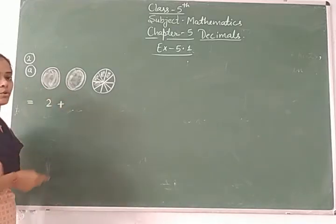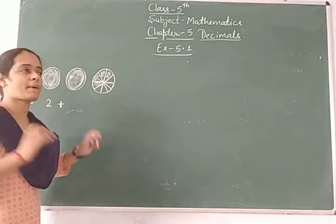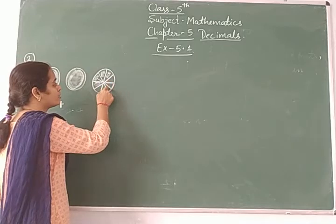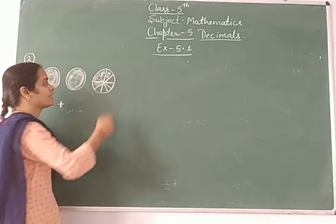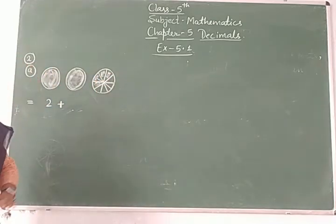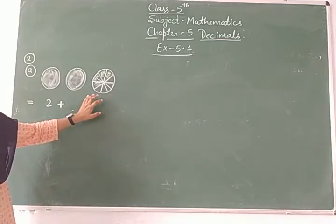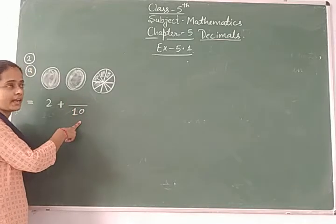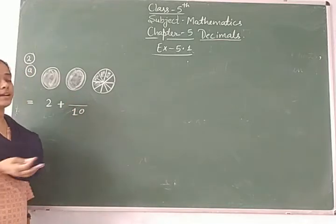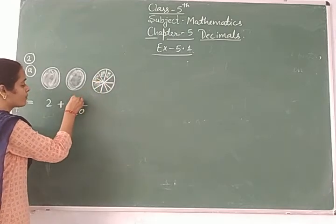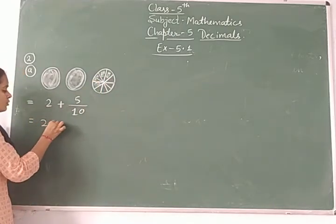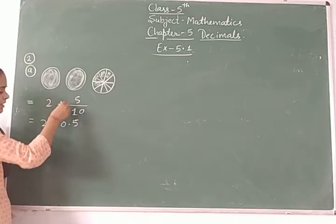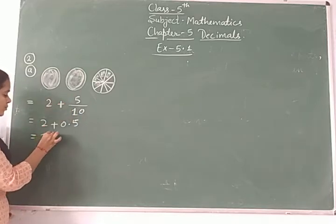This circle has a total of ten parts — count in your book: one through ten. How many parts are colored? Total five parts are colored here — five upon ten equals 0.5. So two wholes plus 0.5 equals 2.5.